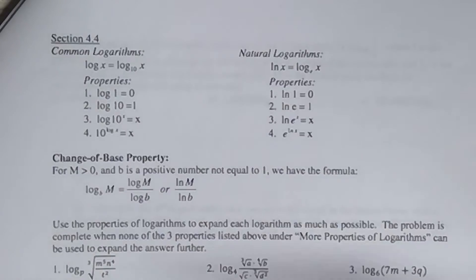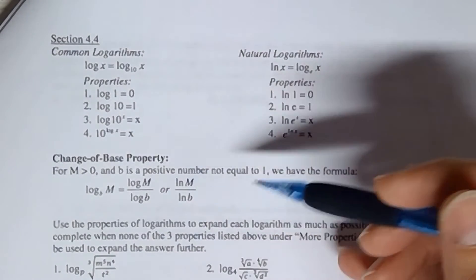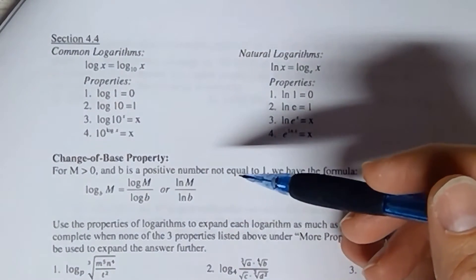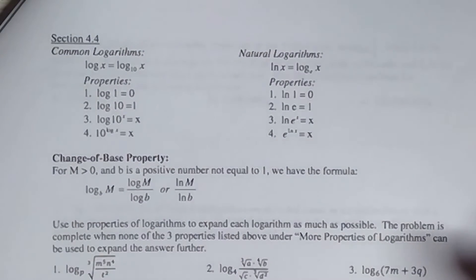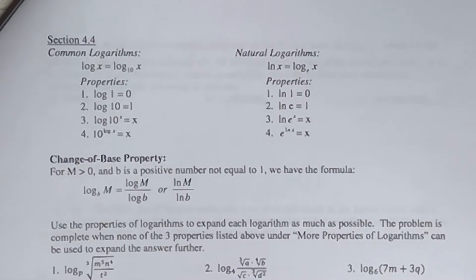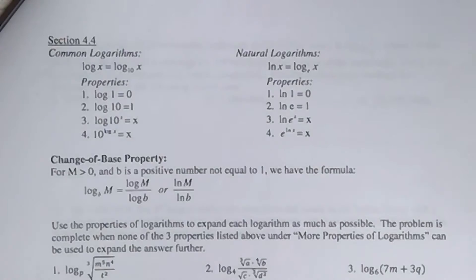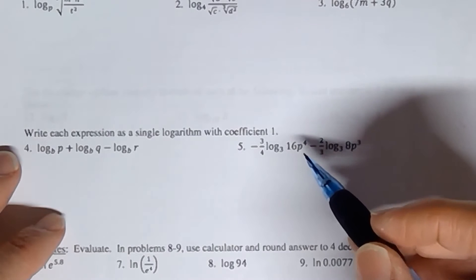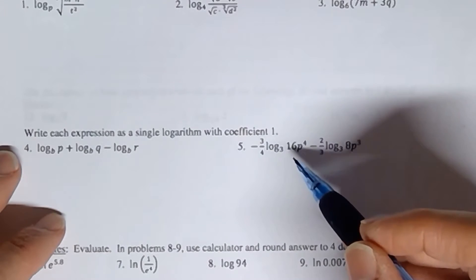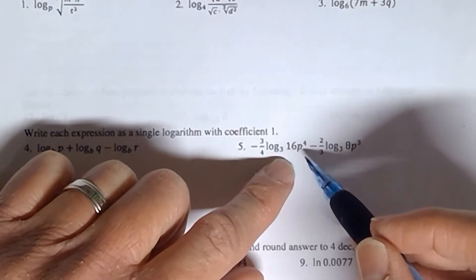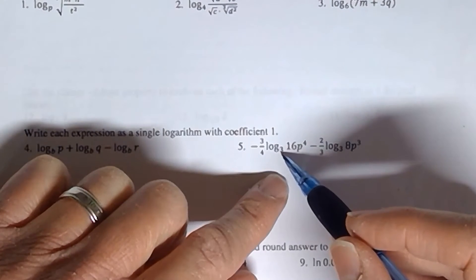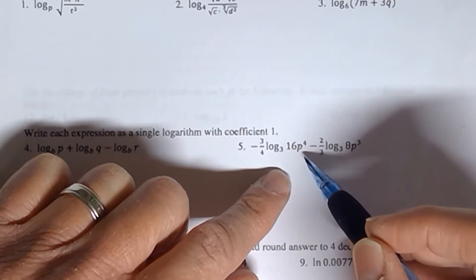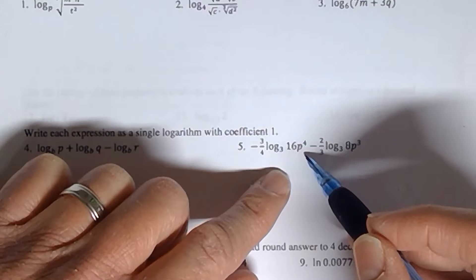We're going to look at those properties from the previous worksheet first before we talk about what's at the top of this page. I want to make it really clear right off the bat that it's easy as a student to make a mistake when you start first learning about logarithms — to do the same thing with logarithms that you do with regular polynomial-type problems. For example, looking at an expression like 16p to the fourth inside of a logarithm: that is your product term, not just the 16 but the entire term.